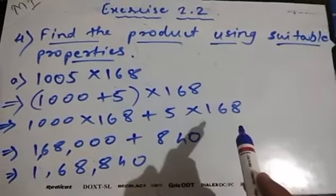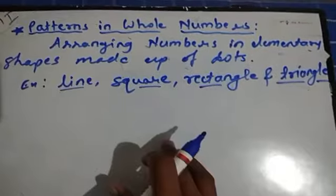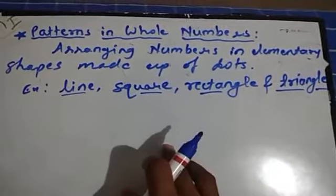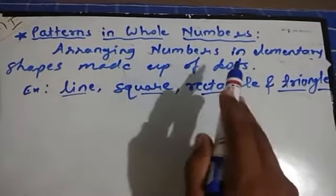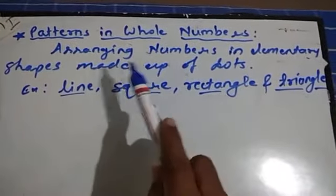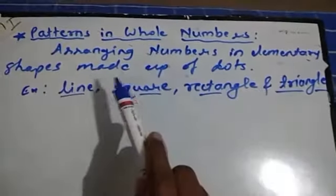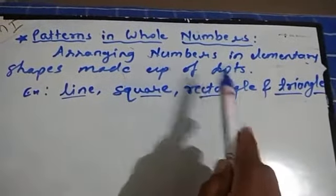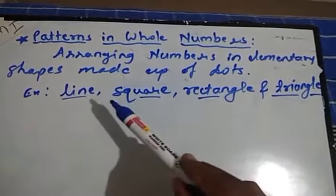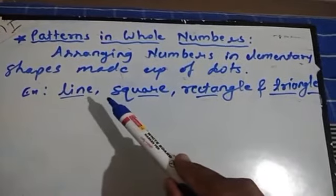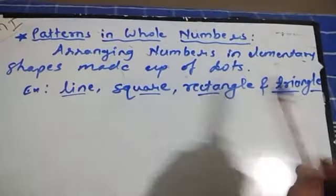Now we are going to study the next part of this chapter: patterns in whole numbers. In this we study arranging numbers in elementary shapes made up of dots — forming shapes like line, square, rectangle, and triangle.